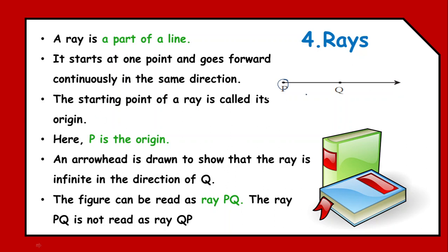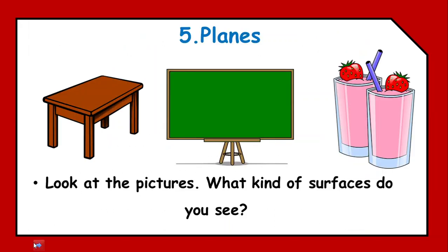Then, the starting point, as I said, it is called as an origin. So, here, point B is the origin. And the arrowhead at the one extreme end shows that it is limitless. And whenever you are labeling this ray, it will be written starting with its origin. Here, origin is P. So it will be written as ray PQ and never it will be written as ray QP. You can't invert it. As like always, the name of the ray has to be started with the origin.